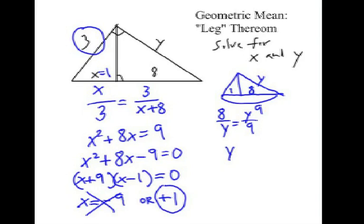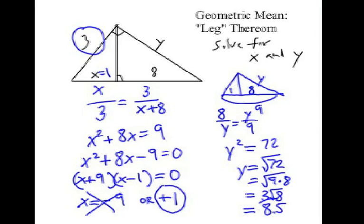Cross multiply to get Y squared equals 72. And when I get the square root, we can write it like this, square root of 72, which is really the square root of 9 times 8, simplifying the radical to be 3 radical 8. If I want it in decimal form, that would be about 8.5.